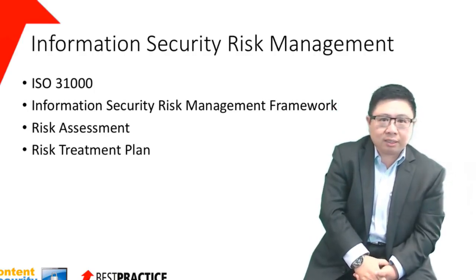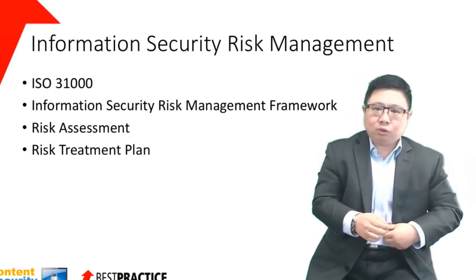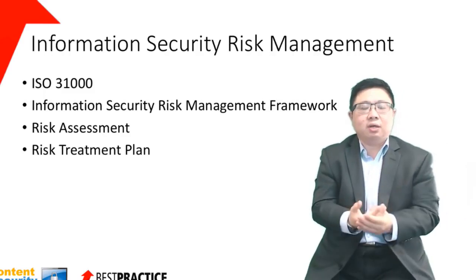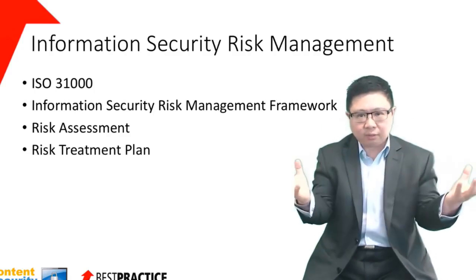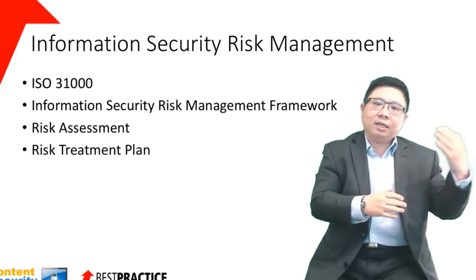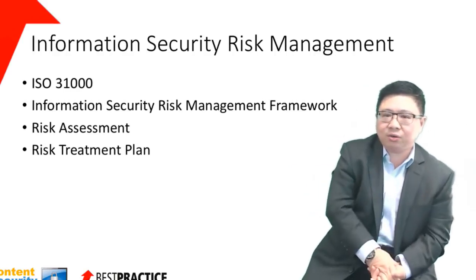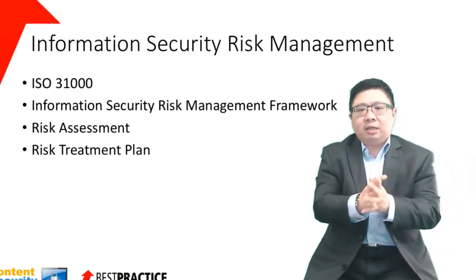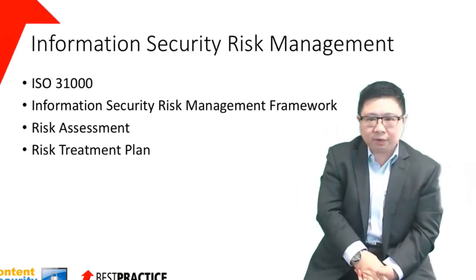Now, in many organizations there is an enterprise risk management framework, and even if you do not have one, it is always good to have a risk management framework in place. Where your organization already has an enterprise risk management framework, what we need to do is take the information security objectives — which we have already outlined in the first phase of security governance — and align those back to the enterprise risk management framework.